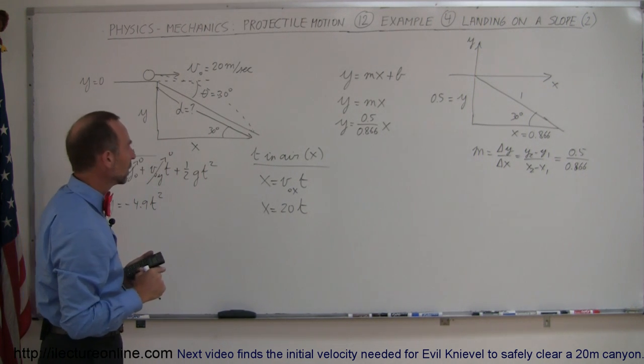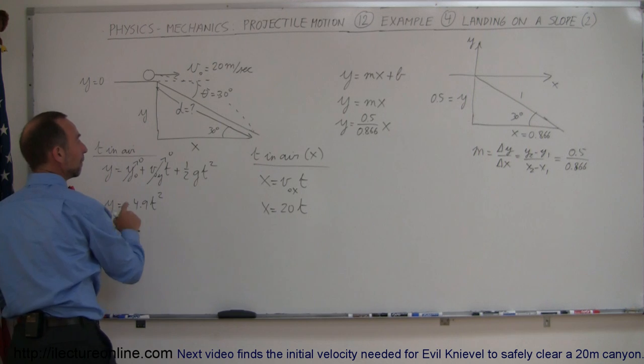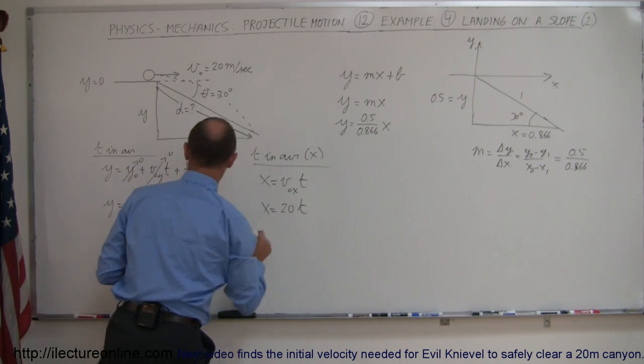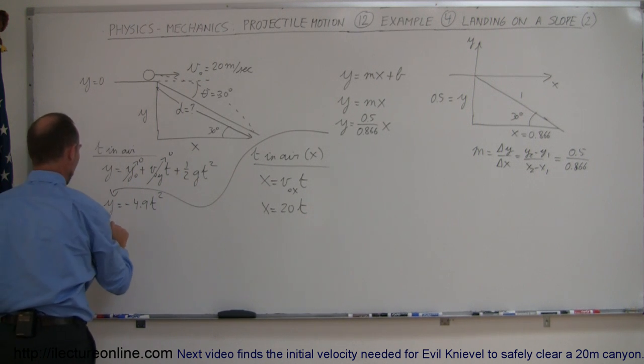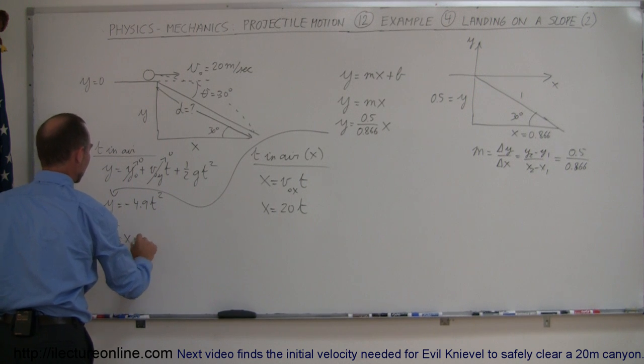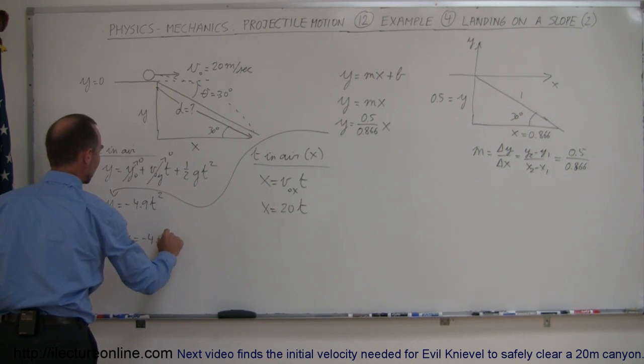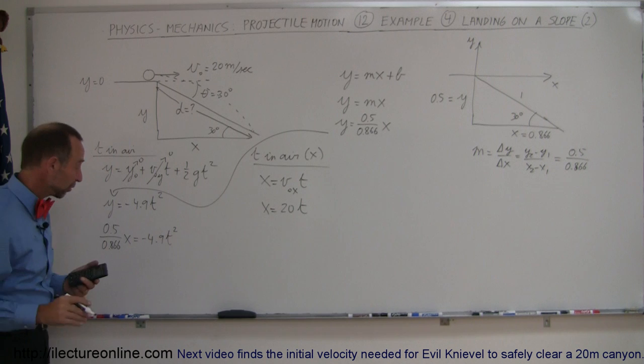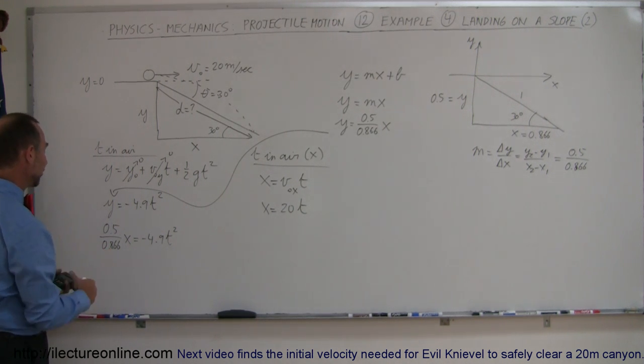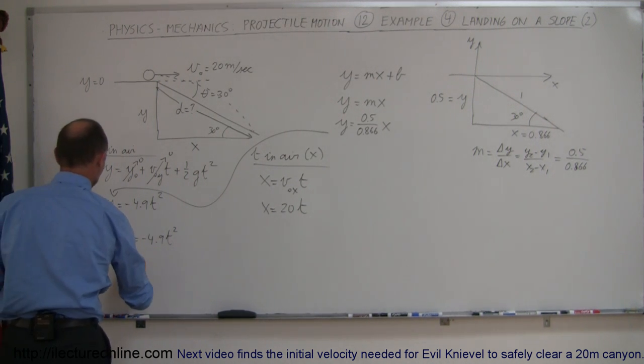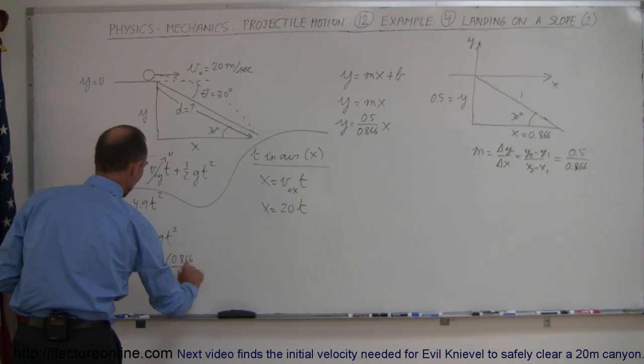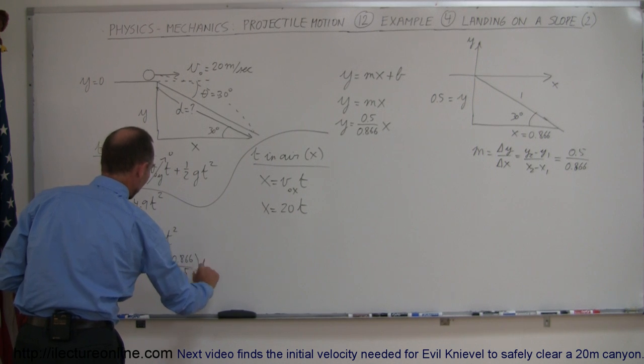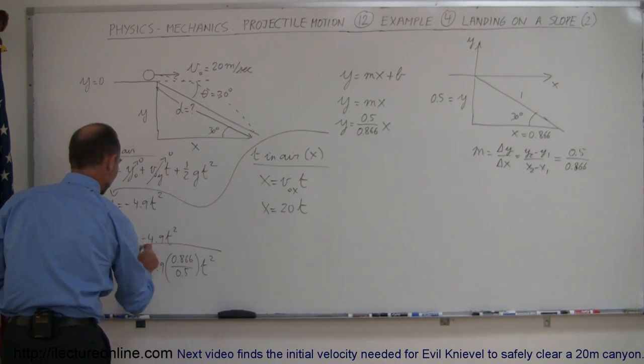What I'm going to do is I'm going to replace this y by this quantity right here. So we'll go ahead and take that and plug it in here. So now we have 0.5 over 0.866x is equal to minus 4.9t squared. Now I'm going to multiply both sides by the 0.866 and divide both sides by 0.5. I end up with x is equal to minus 4.9 times 0.866 over 0.5 times t squared.